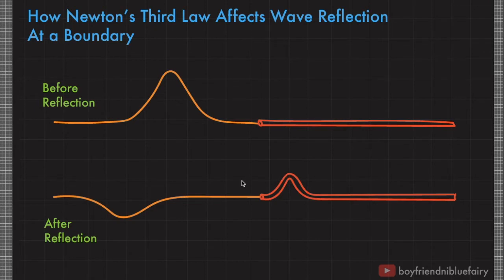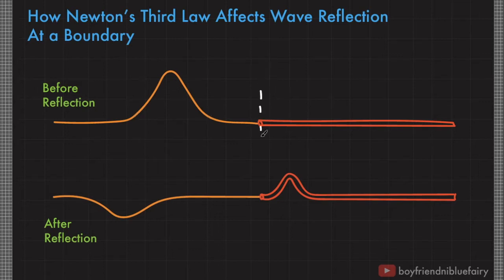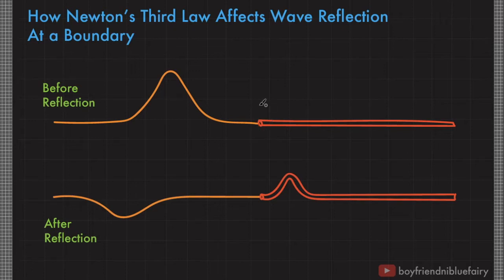If a wave encounters a change in a property that affects its behavior, like a sudden change in linear mass density of the string, the wave can be reflected through that boundary. This point where a scalar quantity changes and affects the behavior of the wave is called a boundary. Whether it's an electromagnetic wave or any kind of mechanical wave, when it encounters such a change in a scalar quantity, we call this a boundary.